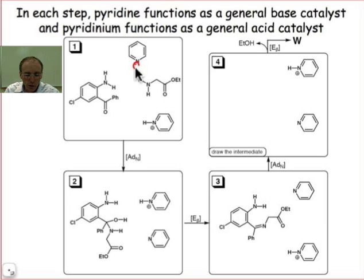We're going to use this general base to remove that proton, activating that nitrogen as a nucleophile, which can do the ADN step, nucleophile addition to a polarized π bond.